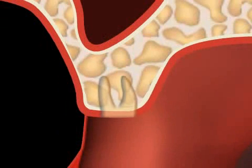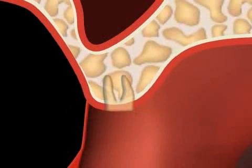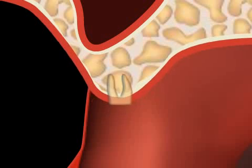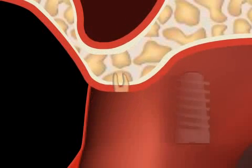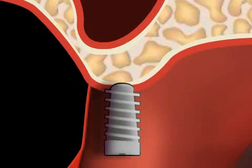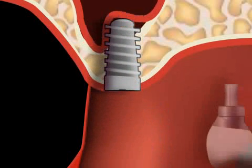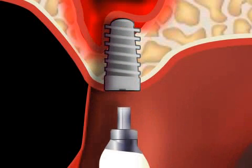First, the alveolar ridge decreases in width, and then it also starts to regress in terms of height. This is called alveolar ridge atrophy. Often, an implantation is no longer possible after alveolar ridge atrophy.